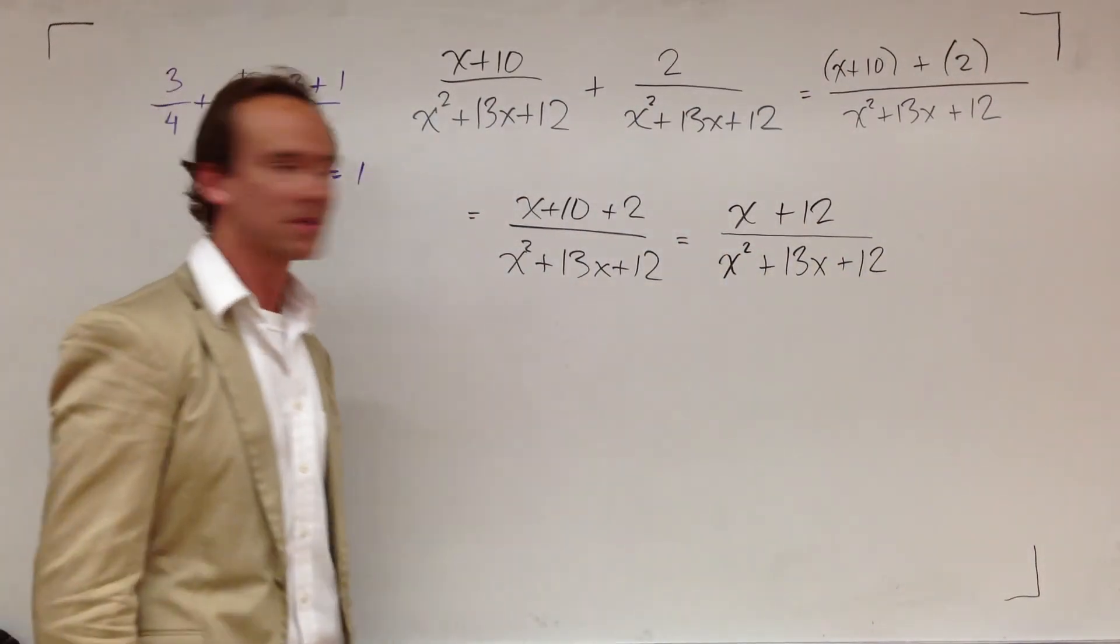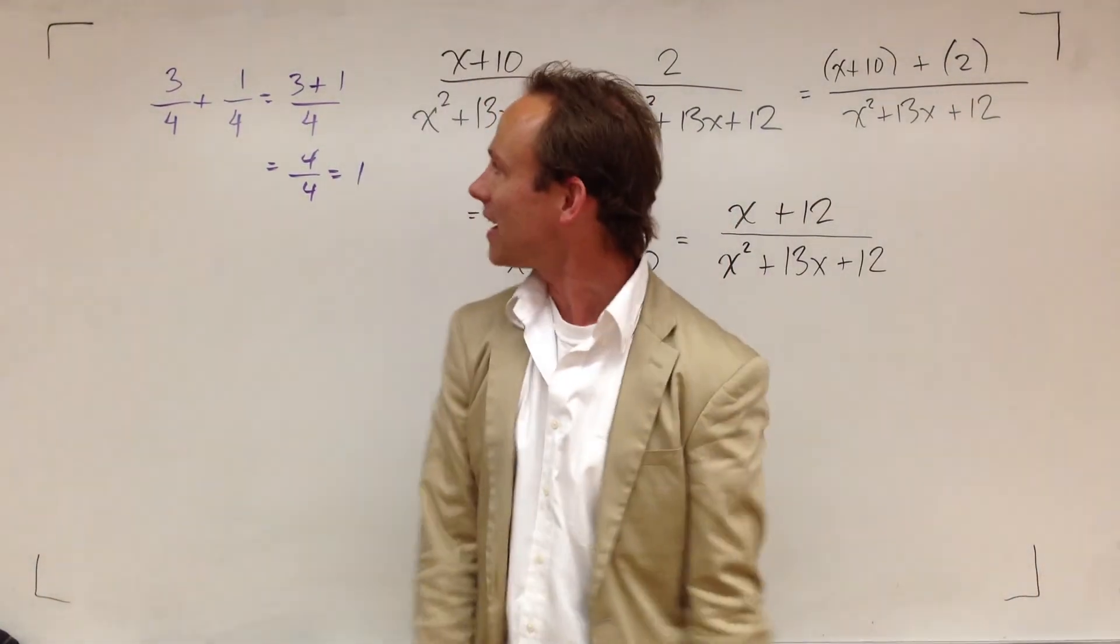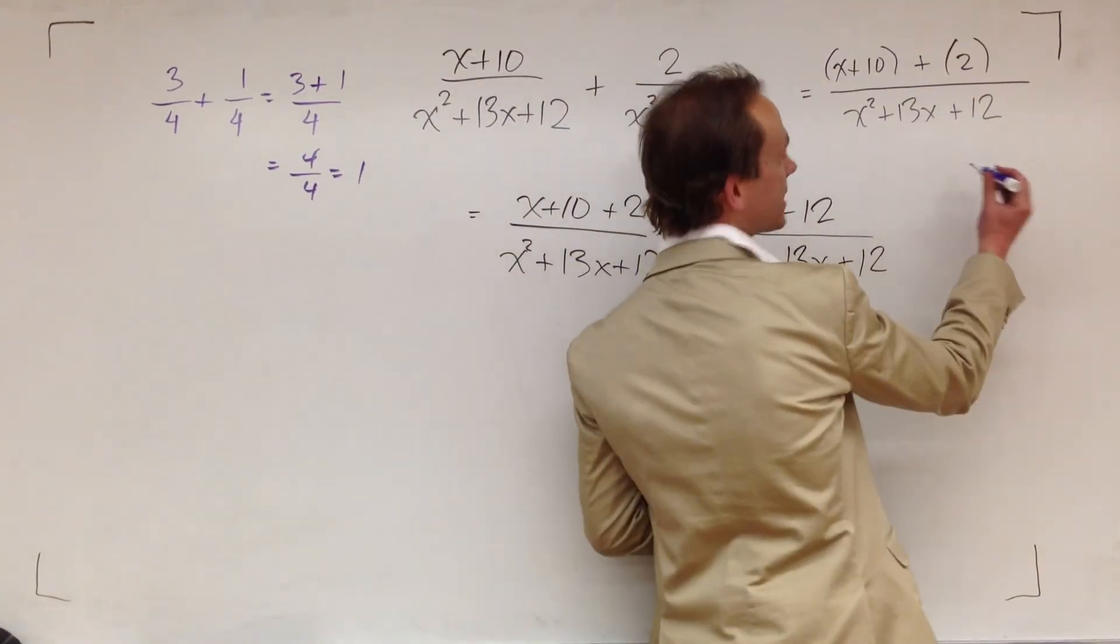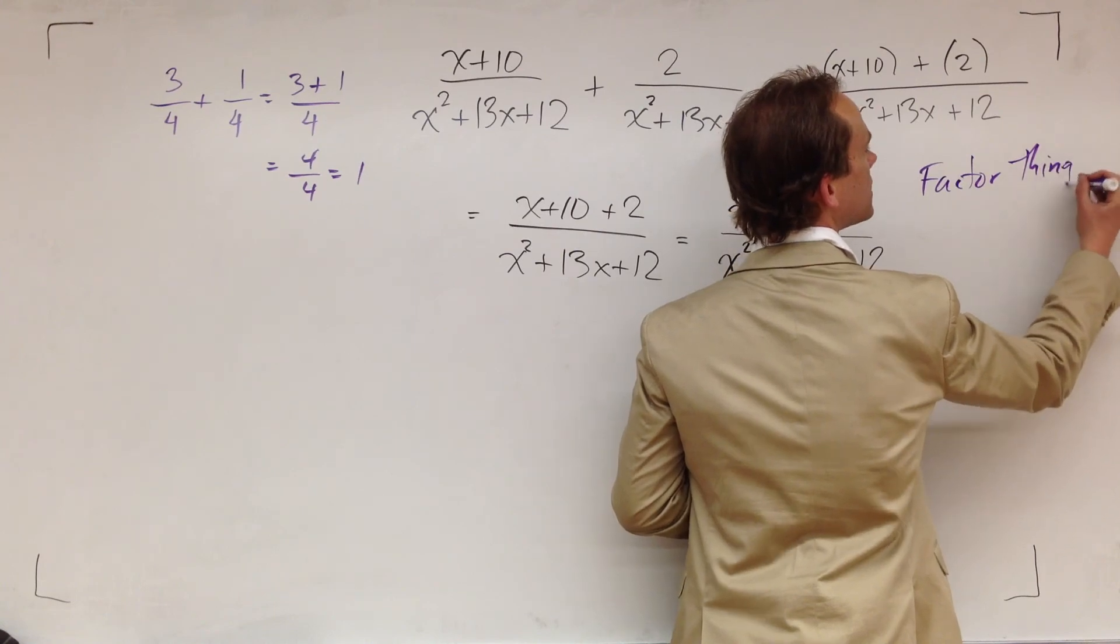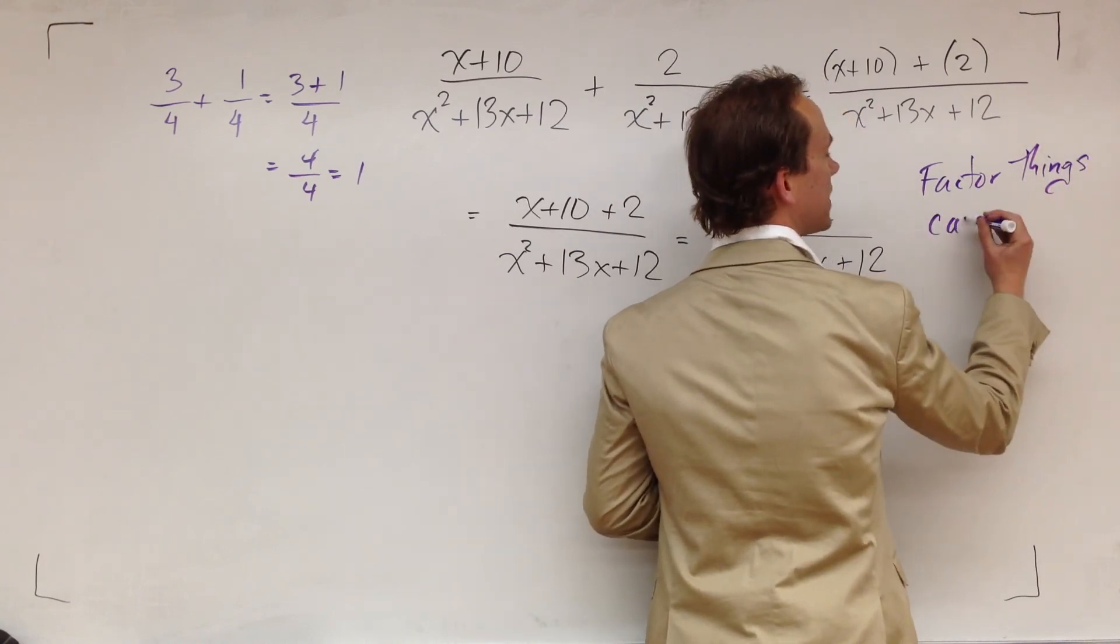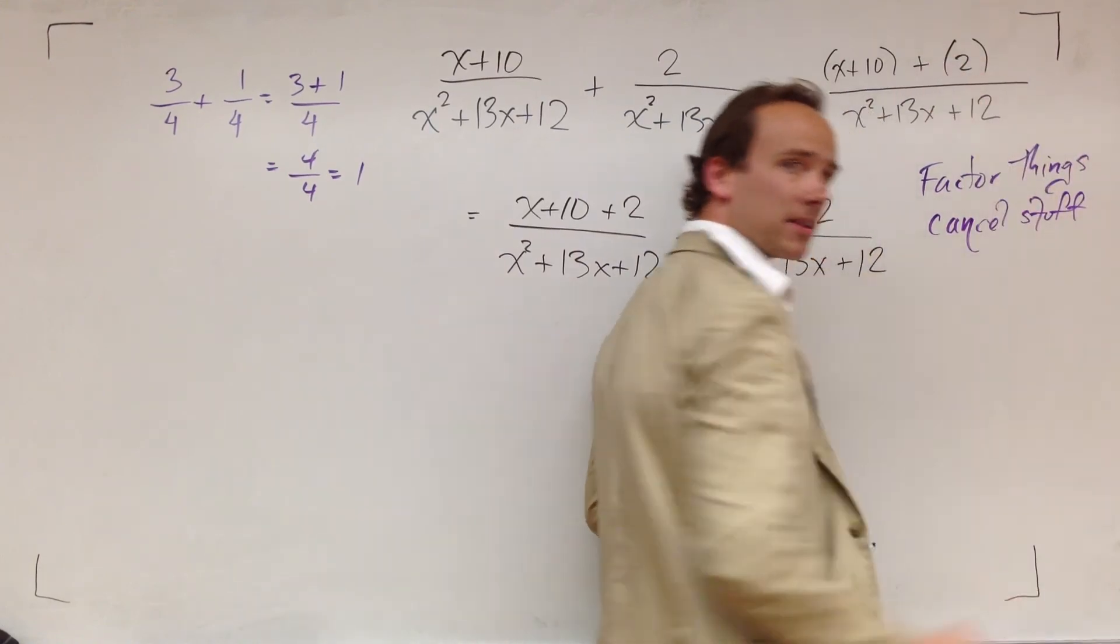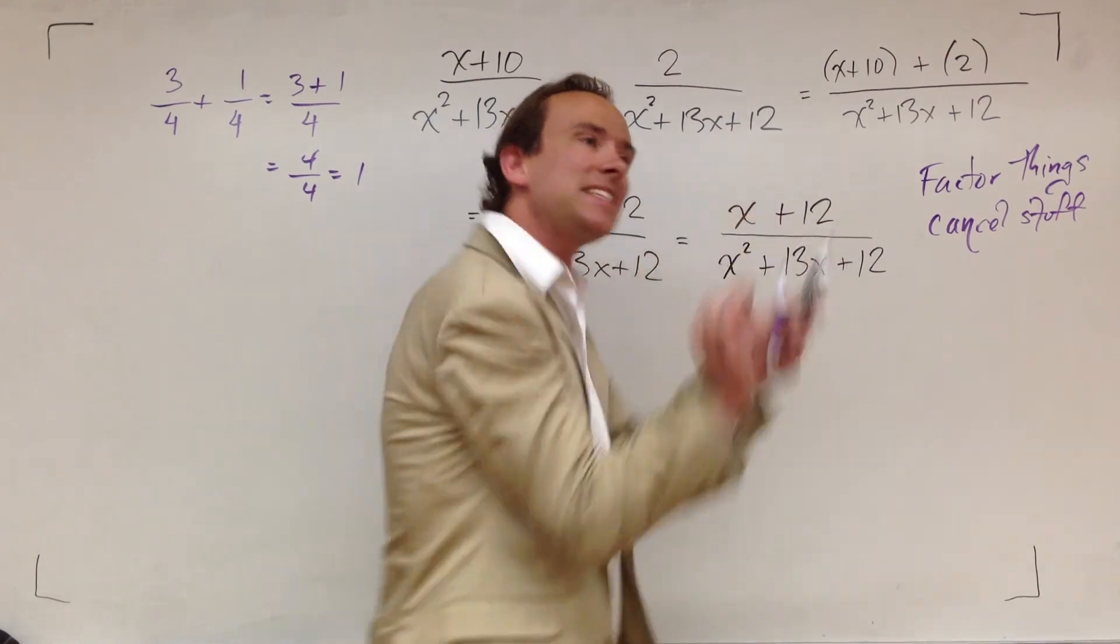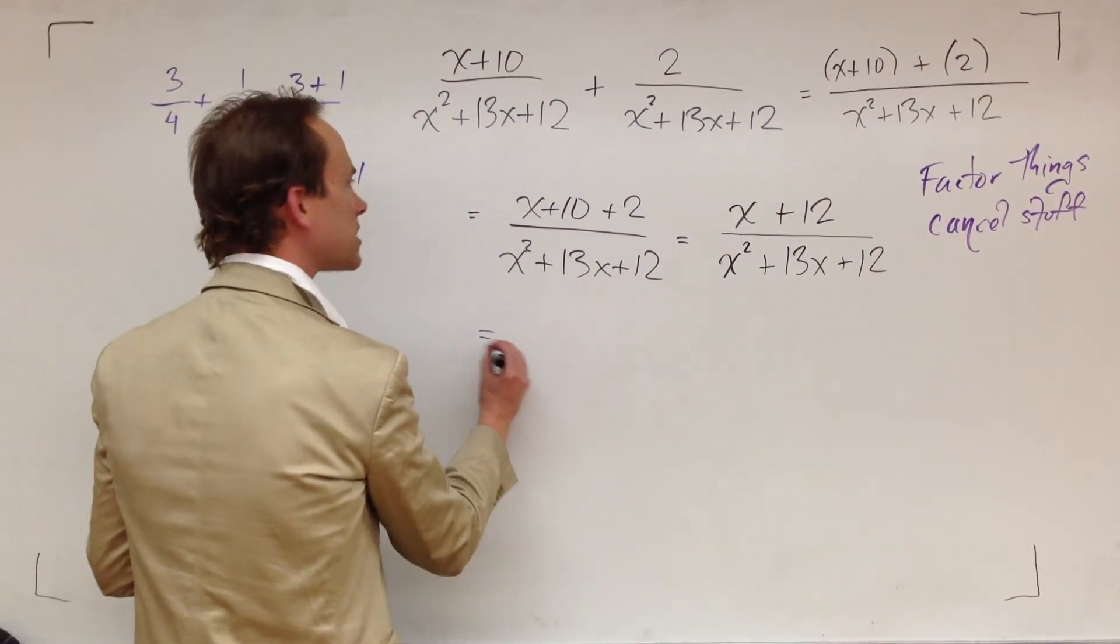Next step. We have one rational expression there, so we got to simplify it. And how do we simplify? I already erased it, I'm going to write it again. We factor things. That's right. And we cancel stuff that is right. Again, that's just a pointer, it's just hinting at the direction you should take this problem. So let's go. Let's factor things.